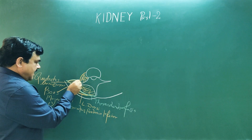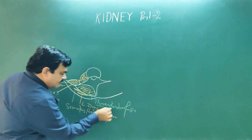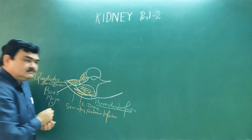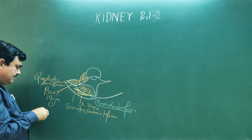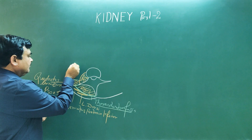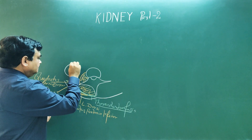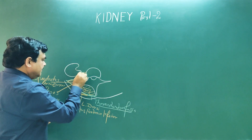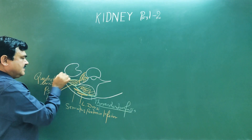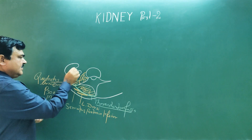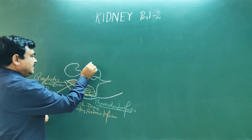Here is the middle layer of thoracolumbar fascia. So this is middle layer of thoracolumbar fascia. So this is anterior, this is middle and this is posterior layer of thoracolumbar fascia. So here is the position of the kidney. It has anterior surface, posterior surface, lateral border and medial border.